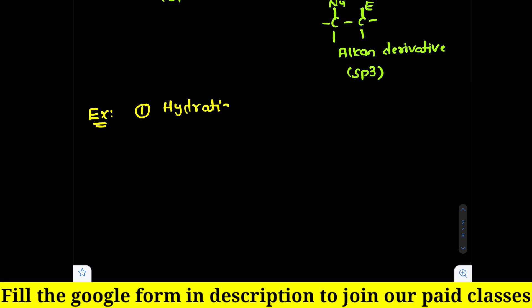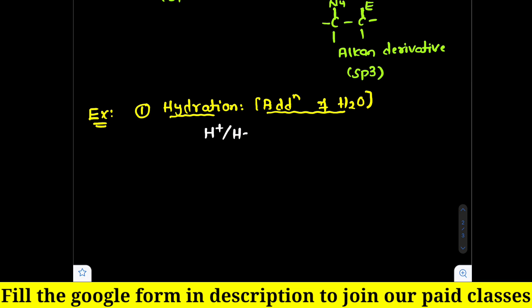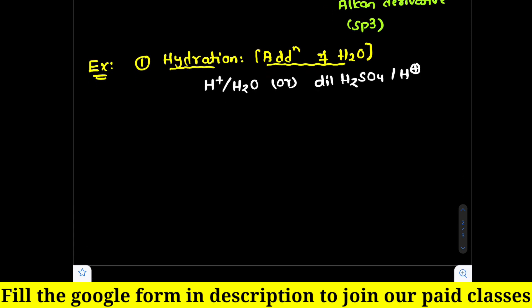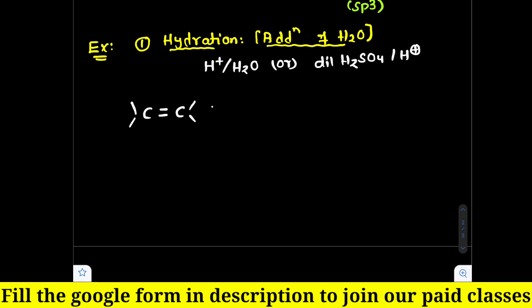The first example of electrophilic addition is hydration — the addition of water. The reagents used are H+ or H2O, or dilute H2SO4. In the presence of H+, both representations indicate addition of water only. The first species attacking the reactant is the electrophile, which is why these are called electrophilic addition reactions.